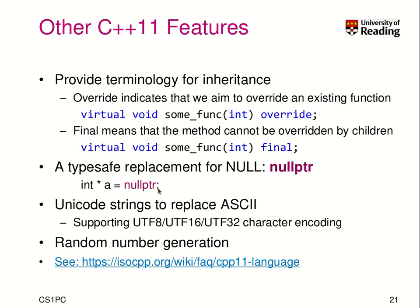There is now a type-safe replacement for null for a pointer, called nullptr. Instead of saying int* a = 0 or NULL as you know from C, you can use nullptr. This is type-safe, meaning the compiler can perform certain checks to ensure it is assigned properly. There is also now support for Unicode strings replacing ASCII — you can use UTF-8, UTF-16, or UTF-32 character encodings.